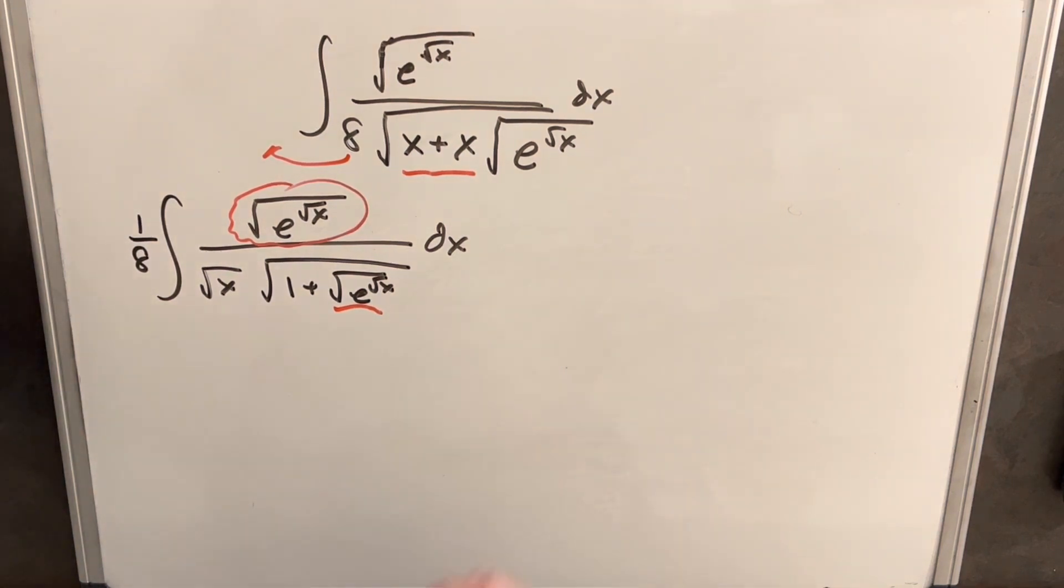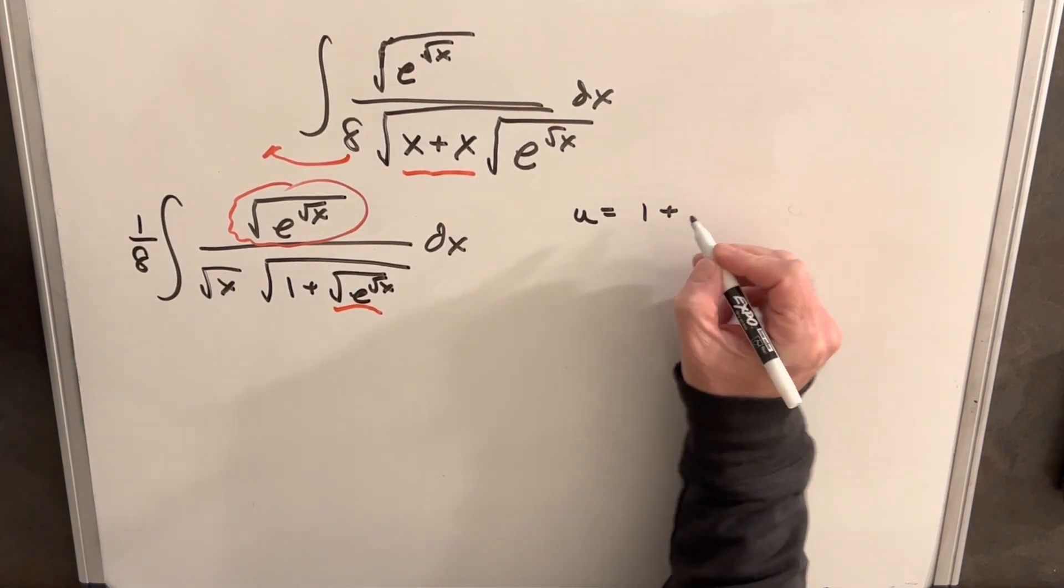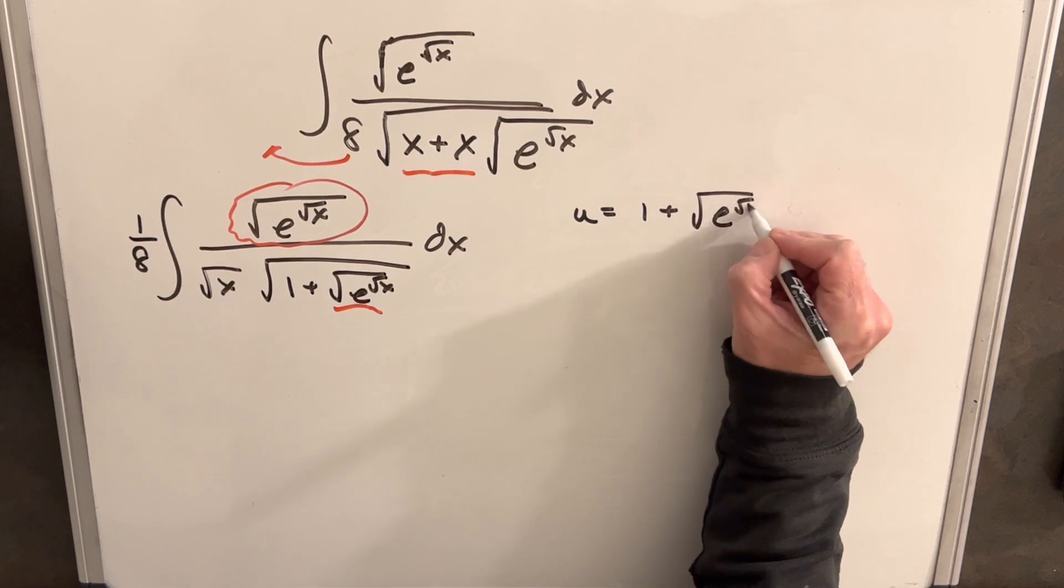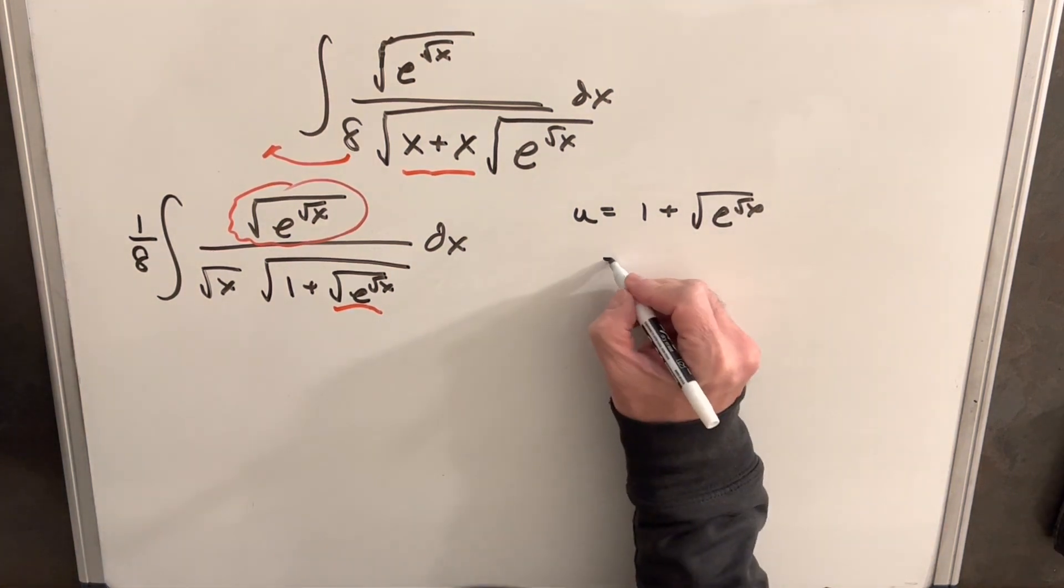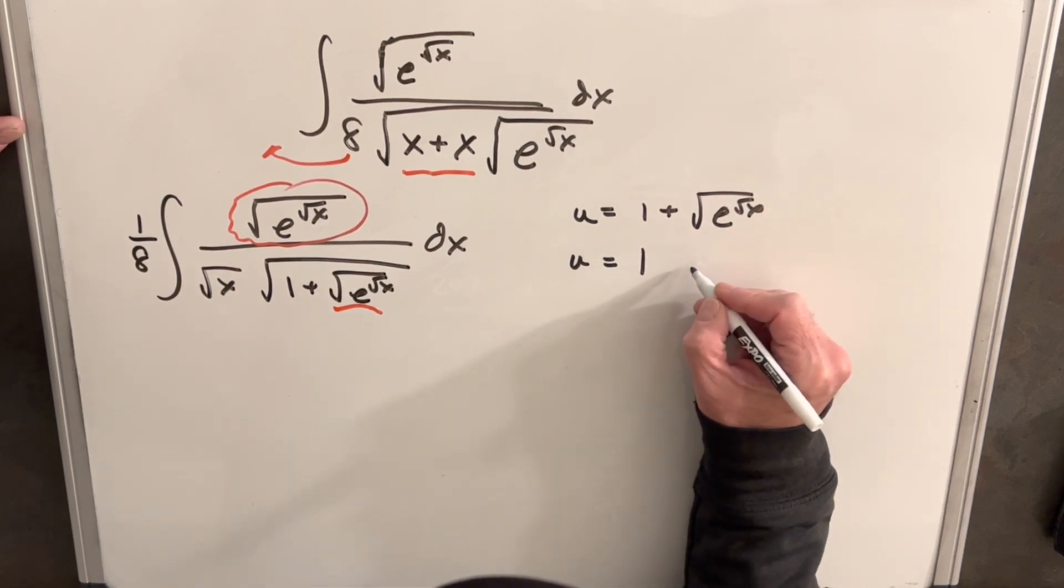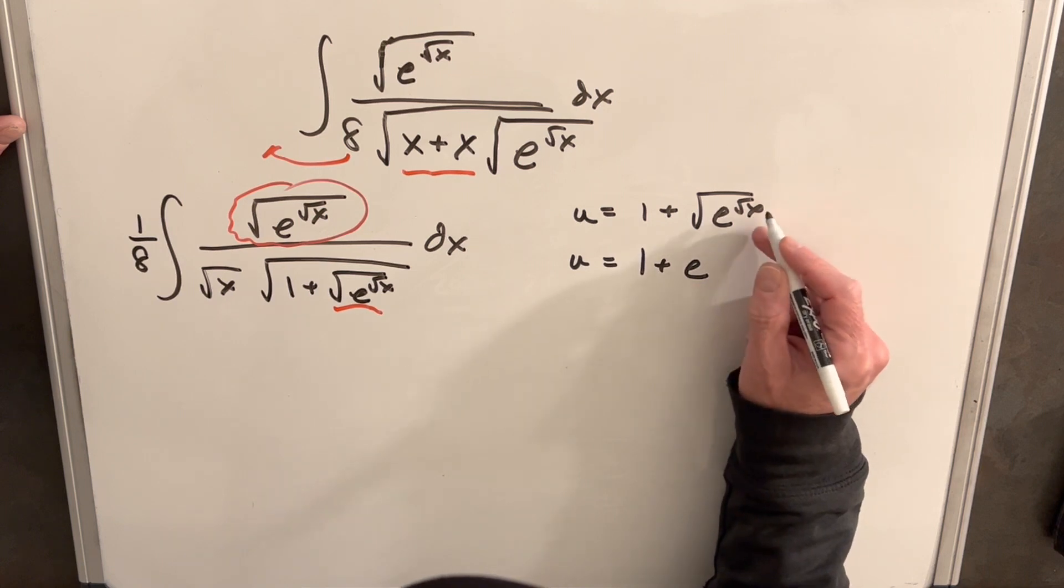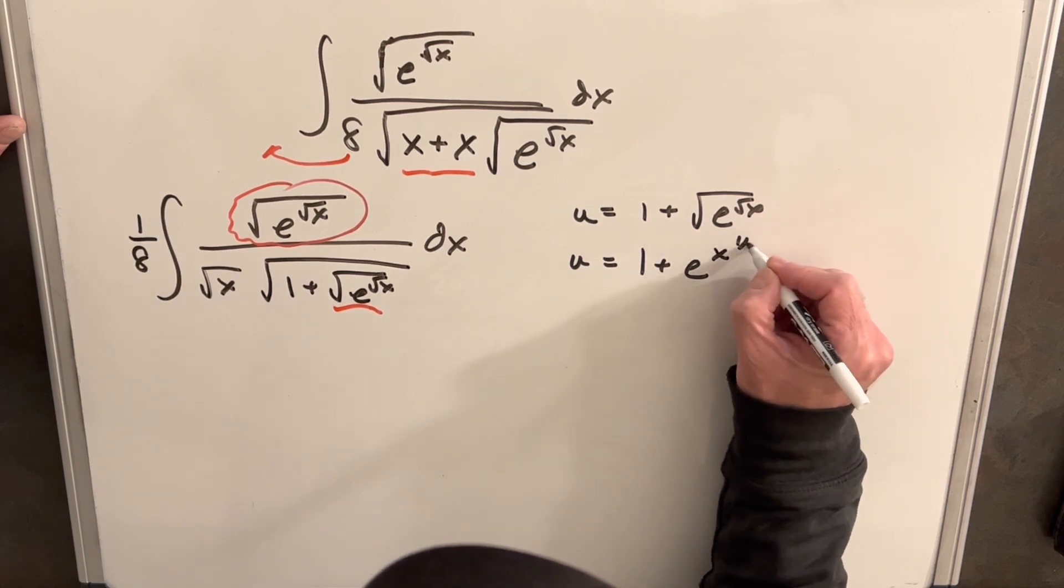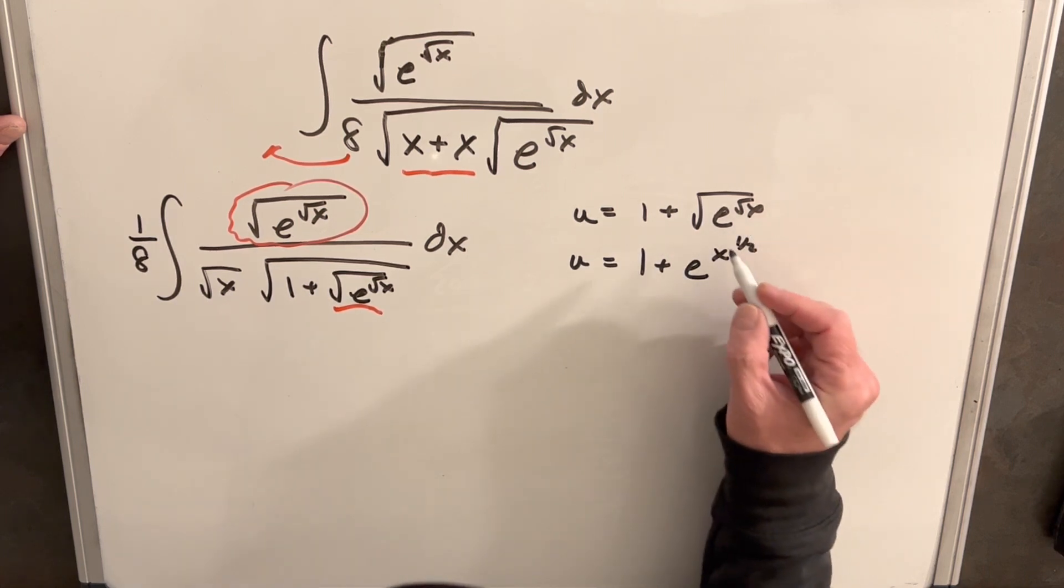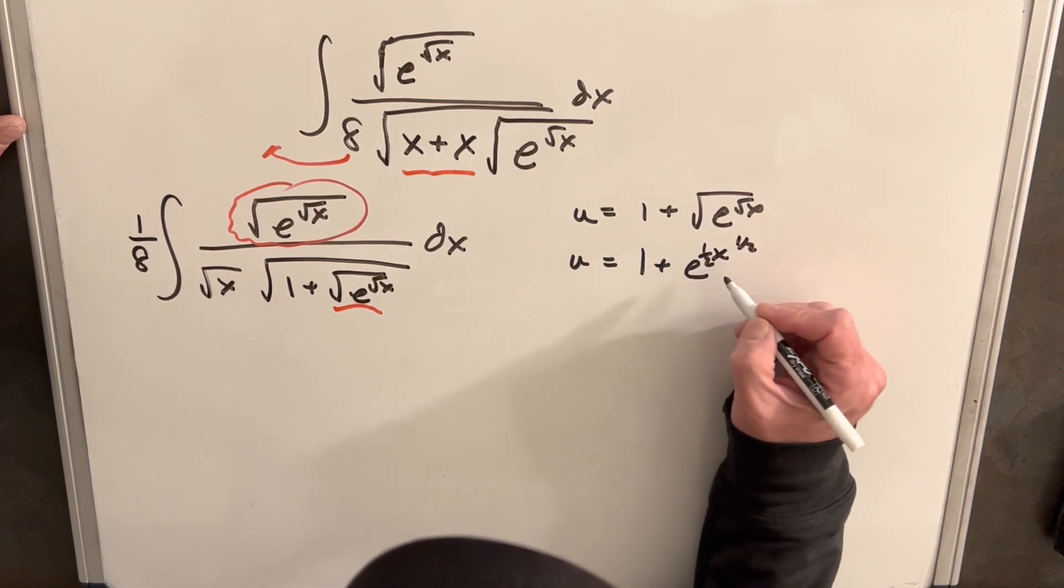So what I'm going to try, you can try it probably a few different ways, but we're going to try u equals 1 plus the square root of e squared x. And I'm just going to rewrite this because I think it's going to be a little easier to deal with if we write our e, well sorry, 1 plus e, we'll write x to the 1 half for our square root. And then this whole thing is in a square root, so we're going to have a 1 half in front here.